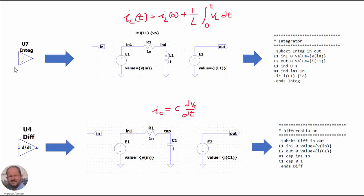This is the implementation of the integrator. We are using an inductor so that the current circulating through the inductor is equal to the integral of the voltage applied to it. Then with a voltage source we generate at the output a voltage equal to the current. The current through the inductor follows: initial value plus one over L times the integral of the voltage. We select L equal to 1. With this statement we define the initial value of the current through the inductor equal to the parameter V0, so this is the initial voltage of our integrator.